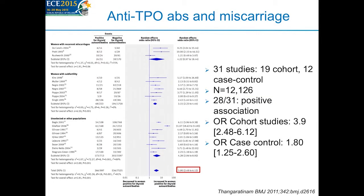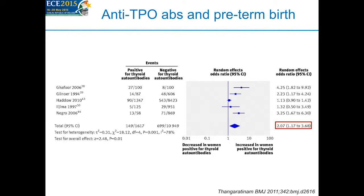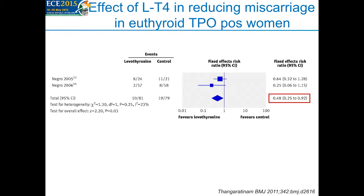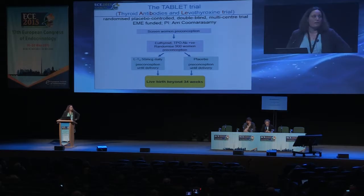Regarding anti-TPO antibody positivity: a meta-analysis from the BMJ looking at euthyroid but TPO antibody positive women found a positive association with miscarriage, with an odds ratio of 3.9 in cohort studies and 1.8 in case-control studies. There was also an association between TPO antibody positivity and preterm birth. In small numbers — fewer than 200 patients — giving levothyroxine replacement to euthyroid TPO antibody positive women did show a positive effect on reducing miscarriage.